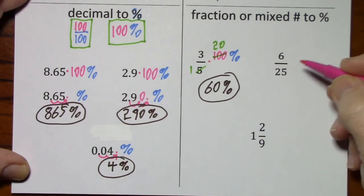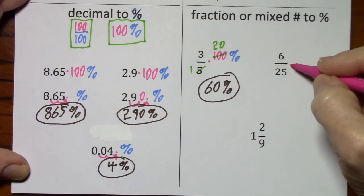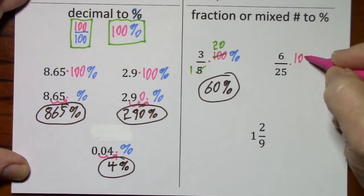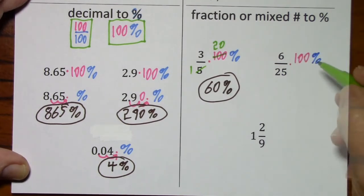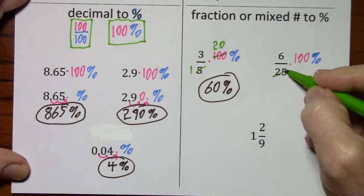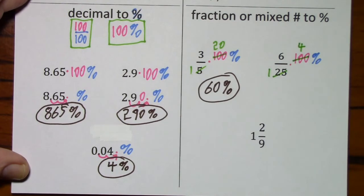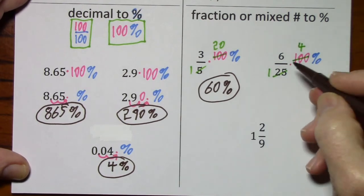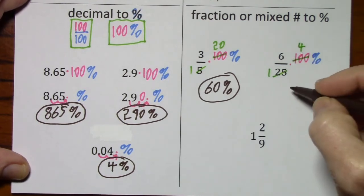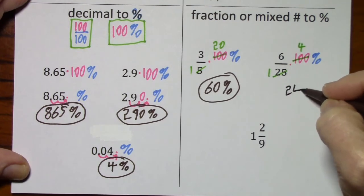So if I want to change this to a percent, I'll say times 100%. Simplify if I can. Divide by 25, divide by 25. And clean it up. 6 times 4 is 24%.